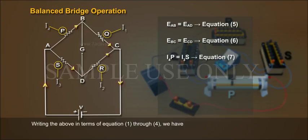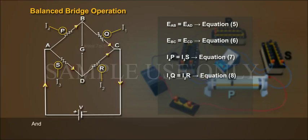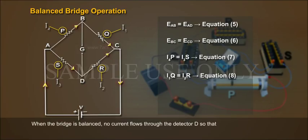I4P equals I3S, Equation 7, and I1Q equals I2R, Equation 8. When the bridge is balanced, no current flows through the detector D, so that: